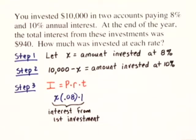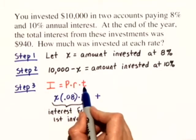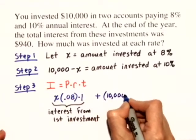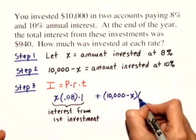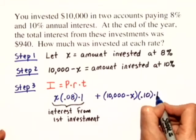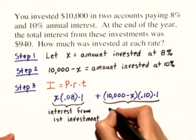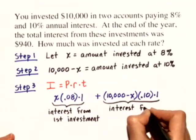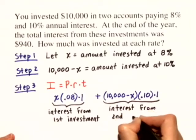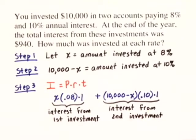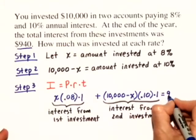We're going to add to that the interest from the second investment. Well, the interest from the second investment is the principal times the rate times the time. So the principal from the second investment is 10,000 minus X times the rate, which is 10% in a decimal form, .10 times the time, which was one year. So this amount that I just wrote down is really the interest from the second investment. And we're told in the original problem that the total interest from these two investments was $940. So if we add them up, it should equal $940.